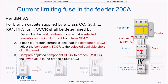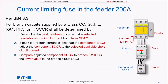The same principle applies using a current-limiting fuse in the feeder. If a branch circuit is supplied by a class CC, J, L, RK1, RK5, or T fuse — any current-limiting fuse — I can do pretty much the same thing. There are a couple differences with fuses versus breakers that make it slightly different, which we'll cover next.